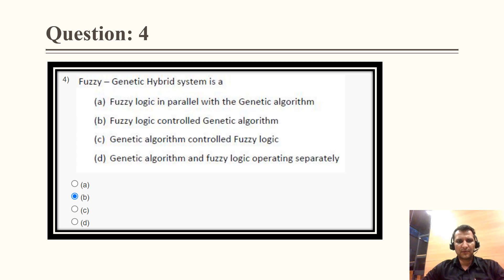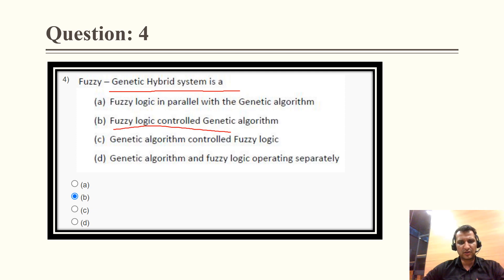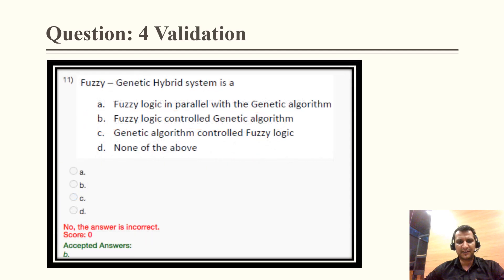Question 4: a fuzzy genetic hybrid system is — when we search this on Google, every answer seems possible, but based on my investigation and from the previous year question paper, the answer is fuzzy logic controlled genetic algorithm. The correct option is B, which is the accepted answer.